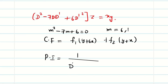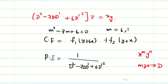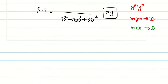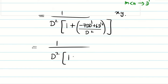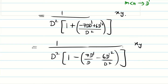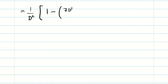Now we deal with the PI: 1 over (d square minus 7 d d dash plus 6 d dash square) of x y. As I said, when there is x power m times y power n, if m is greater than or equal to n, I pull d outside. Here x times y — the power is equal — so I pull the highest derivative of d outside, which is d square. I rewrite as (1/d square) times (1 minus (7 d d dash minus 6 d dash square) by d square) power minus 1 of x y, which simplifies to (1/d square) times (1 minus (7 d dash/d minus 6 d dash squared/d squared)) power minus 1 of x y.